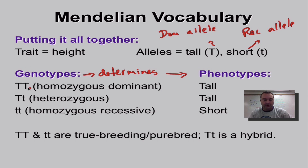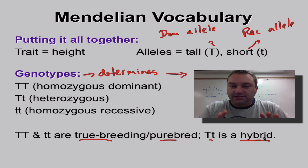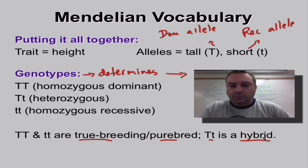The only way to be short is to be homozygous recessive. The homozygous individuals are true breeding or purebred because they breed true to that trait. Any heterozygous individual is called a hybrid. I'd strongly suggest watching this episode again once or twice to make sure you understand all these vocabulary words, because they are essential for solving genetic problems. Until next time, catch you on the flip side.